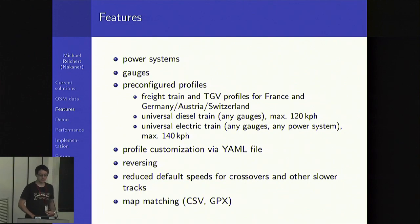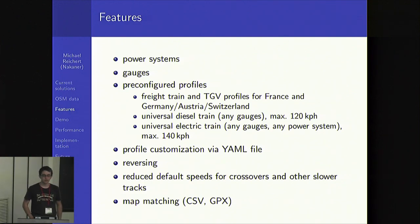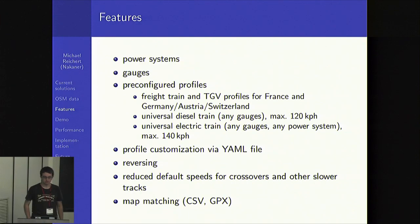My railway routing is based on the GraphHopper library, adapted for the special needs of railway operations. For example, it supports power systems: if a routing profile is only designed for engines which support one power system — for example 15 kilovolts, 16.7 hertz — then it will only use tracks which have the matching tags in OpenStreetMap. It supports gauges, so you cannot use the router to route from Paris to Moscow unless your train supports both the European and the Russian gauge. It comes with three pre-configured profiles: one for freight trains and a few TGV profiles for high-speed trains in France and German-speaking countries.